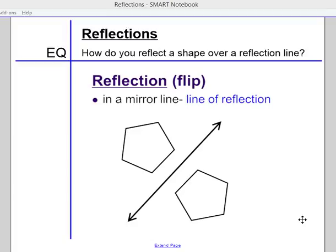Today's lesson is going to cover reflections. Just like you would have a reflection in the mirror, we can reflect geometric figures across lines that are drawn, usually on a coordinate plane, but they don't have to be on a coordinate plane. Another word for reflection is flip. The line that actually causes the flip is referred to as the line of reflection.